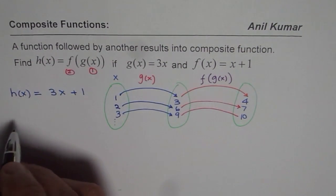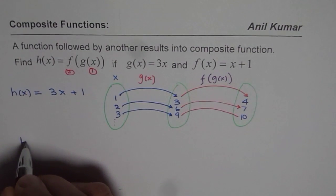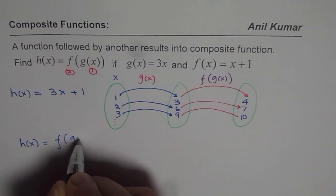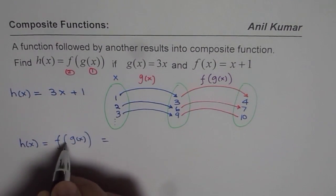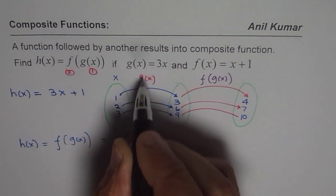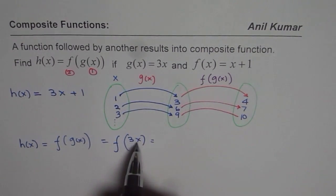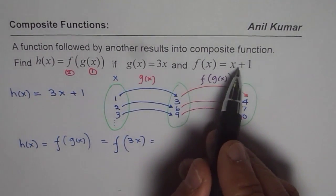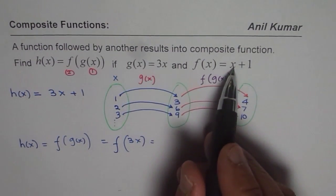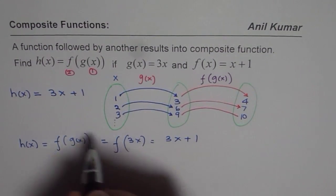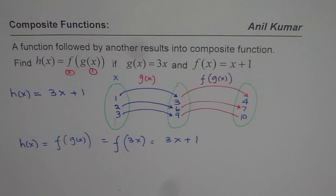Algebraically I can also prove it like this. Let's rewrite this. We have h(x) = f(g(x)), correct. Now what is g(x)? g(x) is given to us as 3x, so f(3x). f(x) is x + 1. I have to replace x by 3x, so we get 3x + 1. We get the same result.